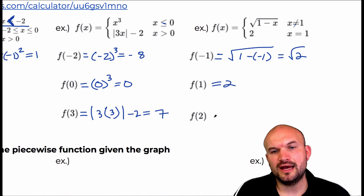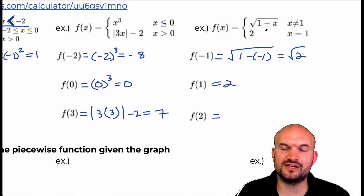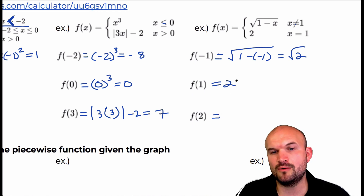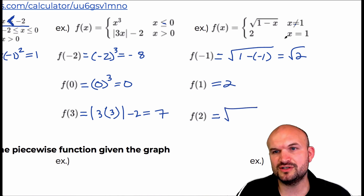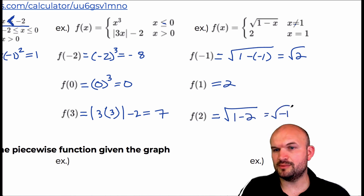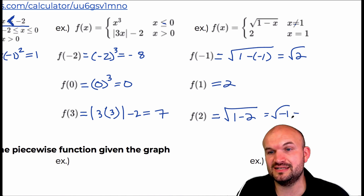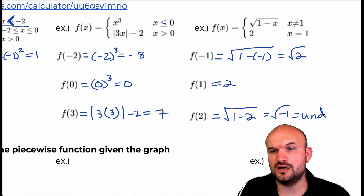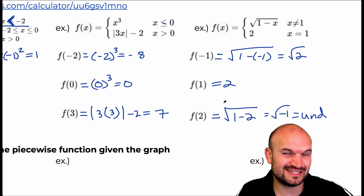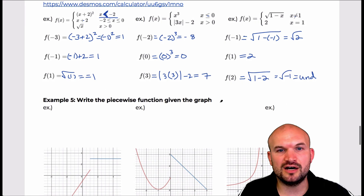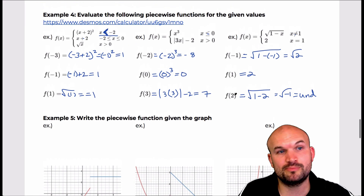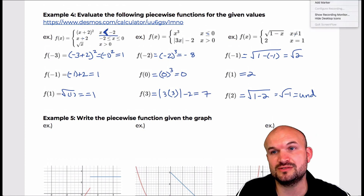For f of two: even though the rule says you can't use one, when I plug in two I get the square root of one minus two, which is the square root of negative one. On the real number system that's not defined, so the answer is undefined. So there you go — that's the basics of evaluating piecewise functions, and next we'll continue learning how to evaluate piecewise functions.